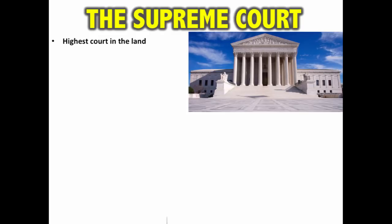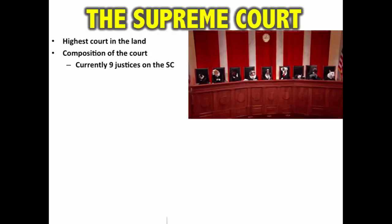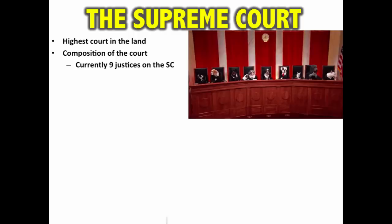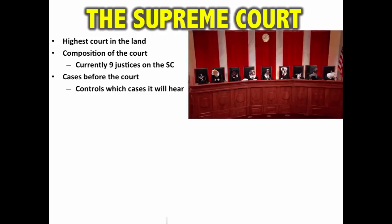Now let's talk about the court itself. It is the highest court in the land — everything from conflicts between states, to federal versus state laws, to interpreting the Constitution is handled by the Supreme Court. Currently nine justices sit on the Supreme Court: eight associate judges and one chief justice. Congress does have the ability to change that number, but it has been at nine since 1869. Each justice has a team of clerks who assist them in their duties.